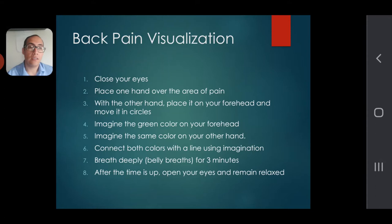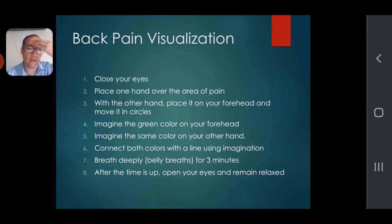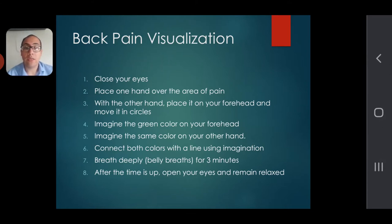Place your other hand on your forehead and move it in circles — just small circles, nice and gentle like this. Continue there and imagine the green color in that spot that you're massaging.